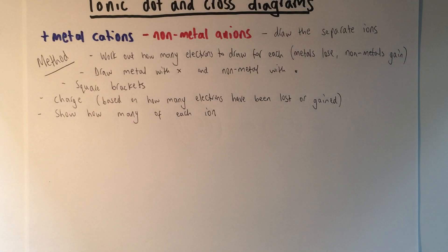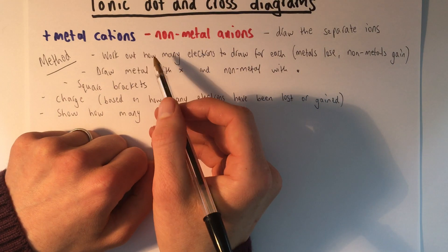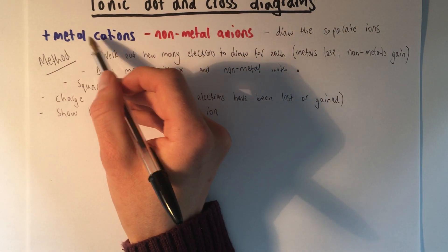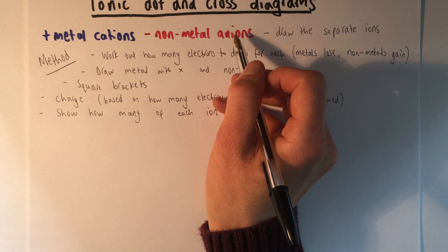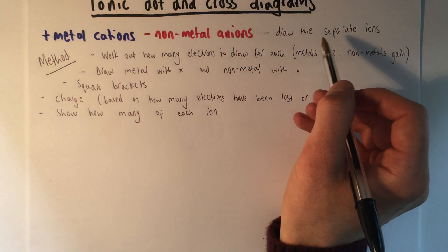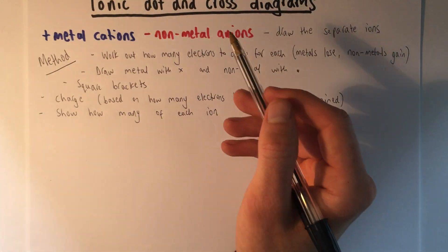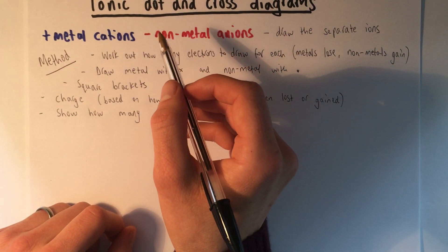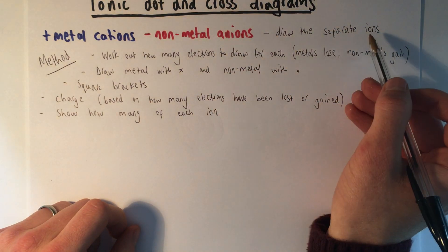I'm going to take you through a couple of other examples for ionic compounds. Ionic compounds always consist of metal and non-metal atoms. The metal atoms have made positive ions and the non-metal atoms have made negative anions. For the dot and cross diagrams, you are showing the two separate ions. It's really important to remember that, because there's also something called a covalent dot and cross diagram, which is totally different. But if you are looking at a compound that's got metals and non-metals, it's got to show two separate ions.